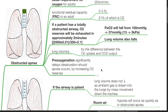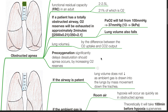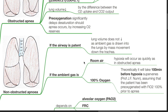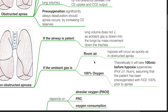Pre-oxygenation significantly delays desaturation should apnea occur, by increasing oxygen reserves. In non-obstructed apnea, if the airway is patent, lung volume does not reduce as ambient gas is drawn into the lungs by mass movement down the trachea. If the ambient gas is room air, hypoxia will occur as quickly as in obstructed apnea. But if the ambient gas is 100% oxygen, theoretically it will take 100 minutes before hypoxia supervenes, according to Prof. G.F. Nunn, assuming the patient has been pre-oxygenated with 100% oxygen prior to the apnea episode.